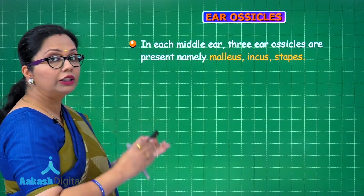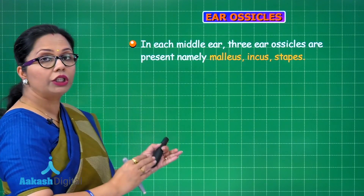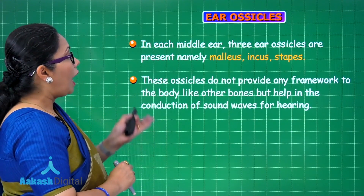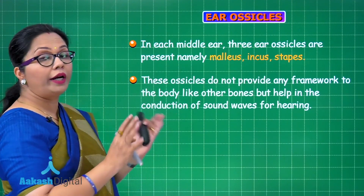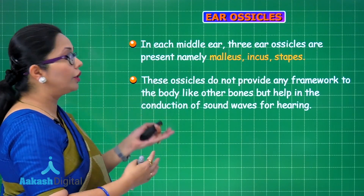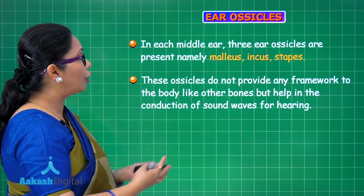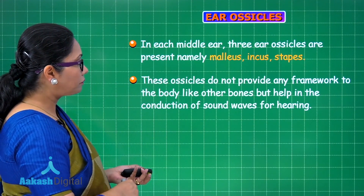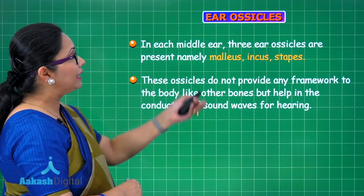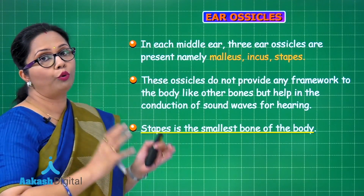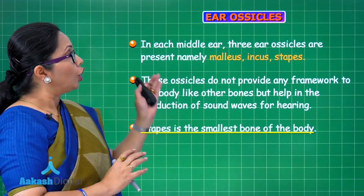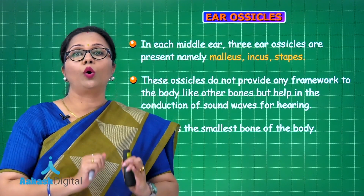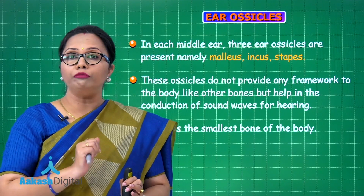The ear ossicles are six in total — three in each middle ear. They are named the malleus (hammer-shaped), incus (anvil-shaped), and stapes (stirrup-shaped). These ossicles do not provide any body framework; their function is the conduction of sound waves from the external ear to the internal ear. The stapes is also the smallest bone of the body. This concludes the discussion of the skull and its associated bones; next we will discuss the vertebral column.